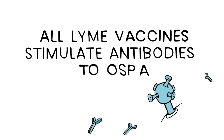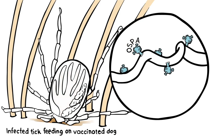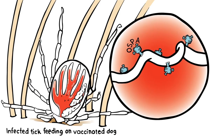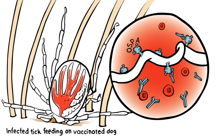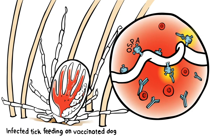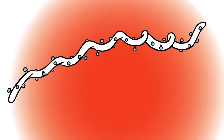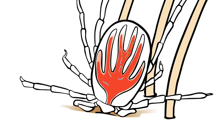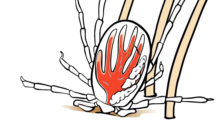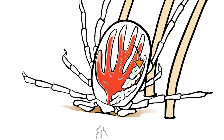All Lyme vaccines stimulate antibodies to OSP-A. When an infected tick takes a blood meal from a dog which has been vaccinated against Borrelia burgdorferi, anti-OSP-A antibodies are ingested with the dog's blood. These antibodies attack the bacteria expressing OSP-A in the gut of the tick and neutralize them. However, some of these bacteria may have already begun to express OSP-C and therefore will not be neutralized by OSP-A antibodies. These bacteria are free to move to the salivary glands of the tick and eventually into the dog.